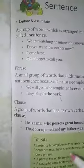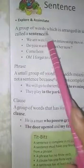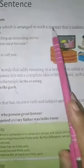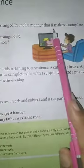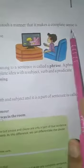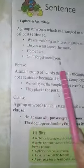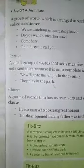What is a sentence? You know it very well. A group of words which is arranged in such a manner that it makes a complete sense is called a sentence. And here are the examples. You have to read it yourself.